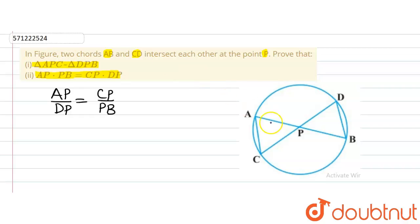So let's do that. In triangle APC and triangle DPB, what we observe is that angle APC and angle DPB are equal because they are vertically opposite angles.